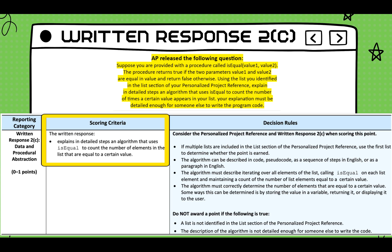A potential question released by AP is, suppose you are provided with a procedure called isEqual with two parameters, value one, value two. The procedure returns true if the two parameters, value one and value two, are equal in value and returns false otherwise. Using the list you identified in the list section of your personalized project reference, explain in detailed steps an algorithm that uses isEqual to count the number of times a certain value appears in your list. Your explanation must be detailed enough for someone else to write the program code.